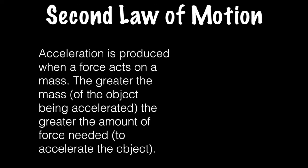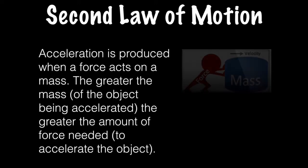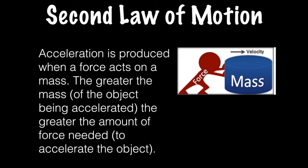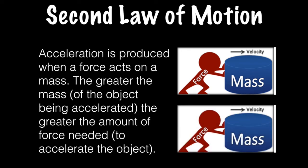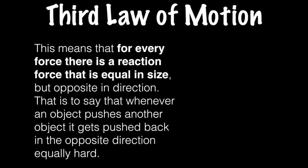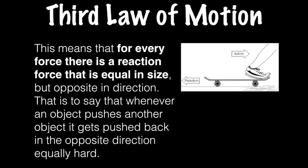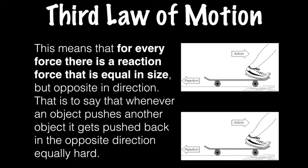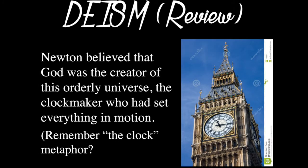The second law of motion: acceleration is produced when a force acts on a mass. The greater the mass, the more force you need to move it. It's easier to push a bicycle than a truck — you need more force to move that greater mass. The third law of motion: for every force there is an equal and opposite reaction force. Just imagine someone pushing off a skateboard — they push one way and accelerate in the other direction.